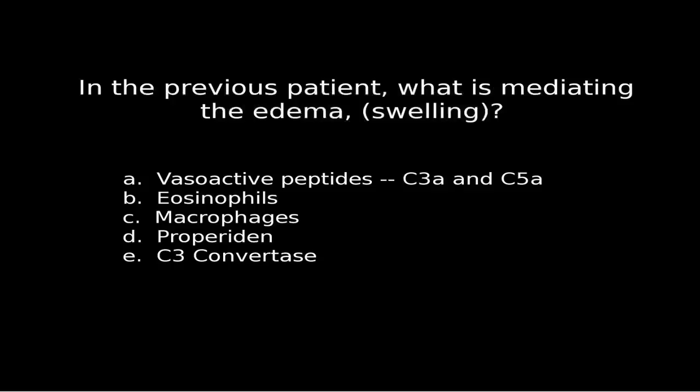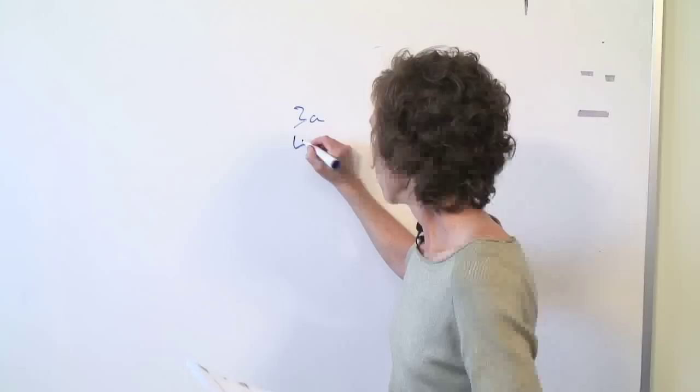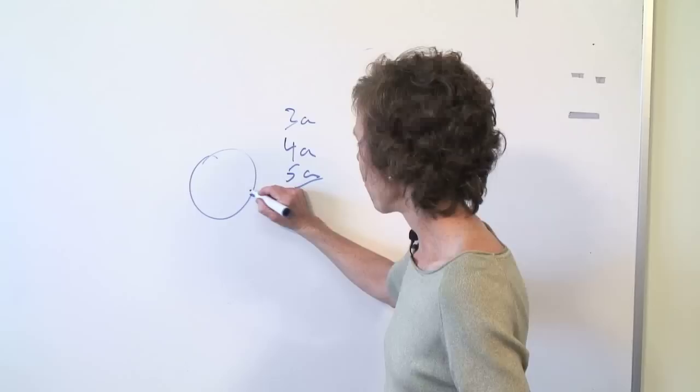Question two: in the patient above, what is mediating the edema? The answer is A — the vasoactive peptides C3a and C5a. As we discussed with the classical complement pathway, you get the anaphylatoxins C4a, C3a, and C5a. Those are going to act on the mast cells; mast cells have receptors for C5a, and that causes secretion of histamine.